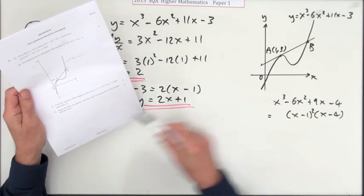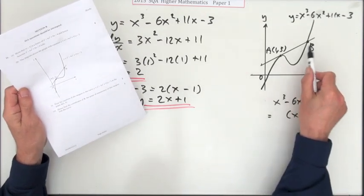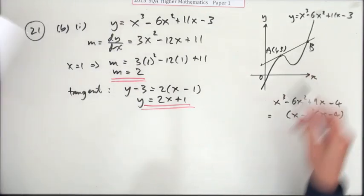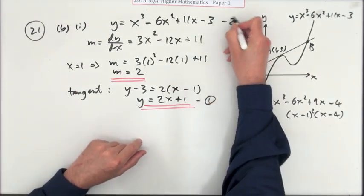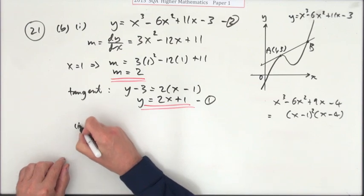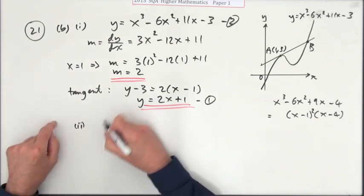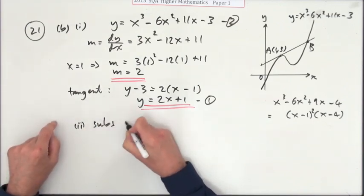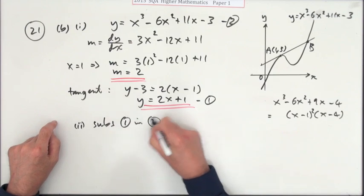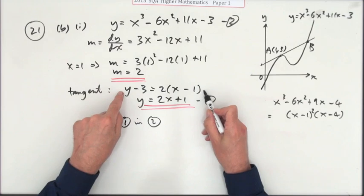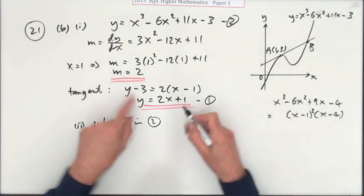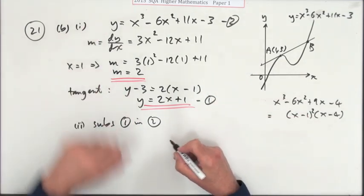Part (ii): hence find the coordinates of B, the point of intersection of this tangent with the curve. Well, where does this cut that? In other words, for part 2, I'm looking for intersection, so substitute equation 1 into equation 2. That's why you wanted it in this form - probably for the first part, leaving it like that would have got you the mark, but you need it this way to substitute it in.